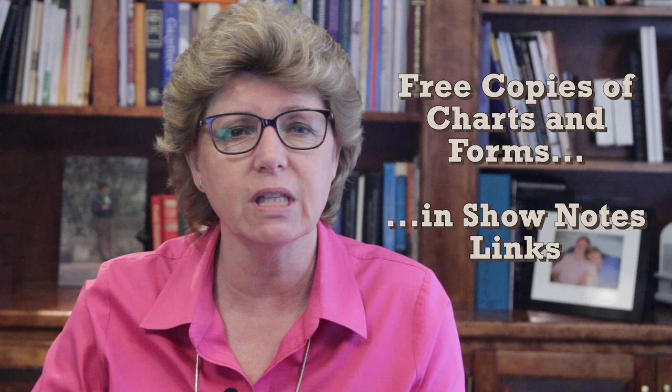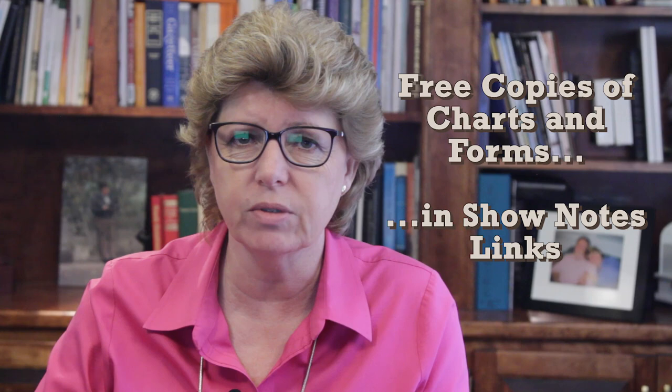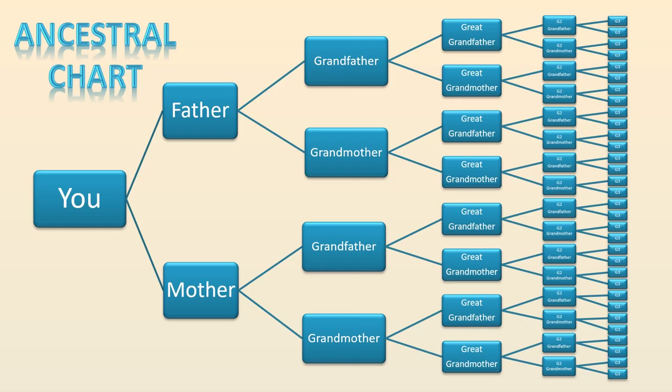The first two show you links between each generation, while the third shows each immediate family unit. I've produced links for free copies from the National Archives, FamilySearch.org, and Ancestry.com in the links below. The Ancestral Family Tree Chart starts with one person and shows the links between the parents, grandparents, great-grandparents, and so on in the direct ancestral line. The drawback is it doesn't show all of the children for each couple, but only each child in the direct lineage.